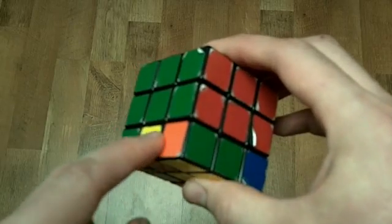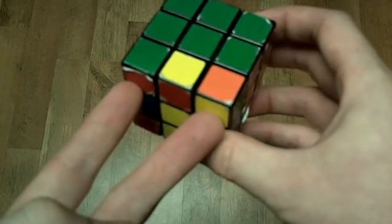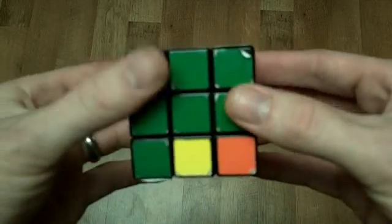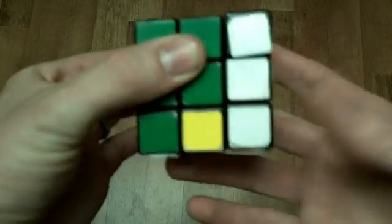And you look there, this is green orange and this is green red. So I need to switch these two without changing anything else. So here's the pattern for switching these two. I bring it forward. Turn it sideways.